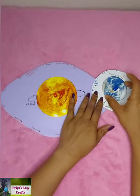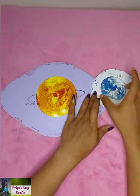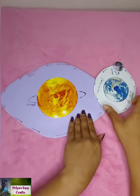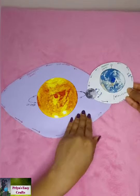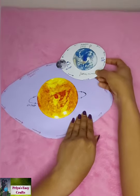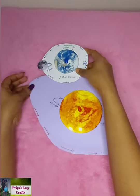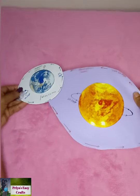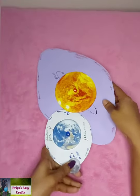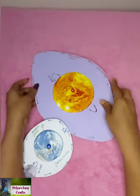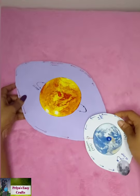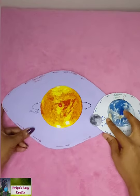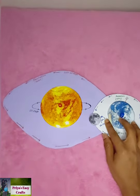The model showing the relationship between Sun, Moon, and Earth is ready now. Using this idea you can create your own. Hope you like this video. If you like it, please do subscribe and don't forget to click the bell icon. Do like, comment, and share for more craft-related videos. Thanks for watching. Bye.